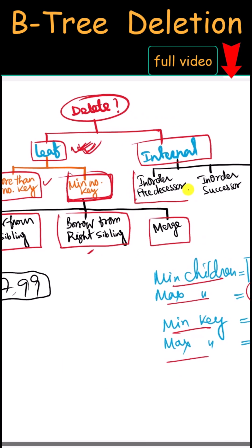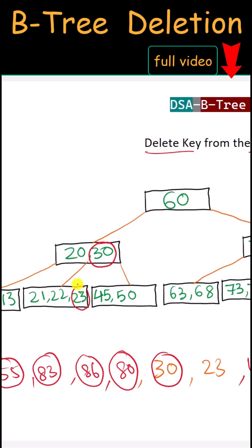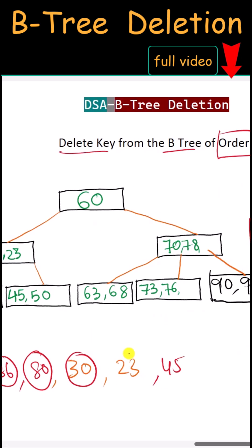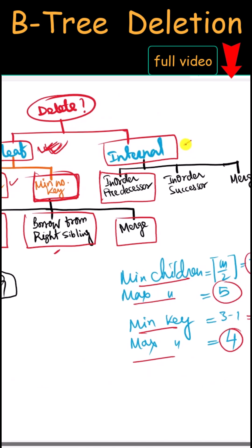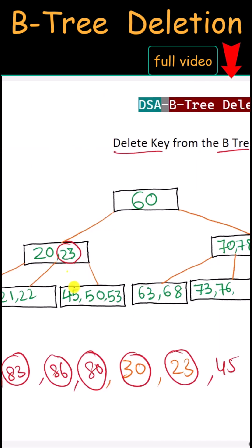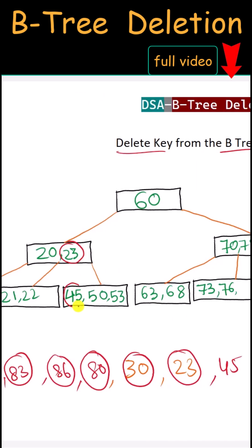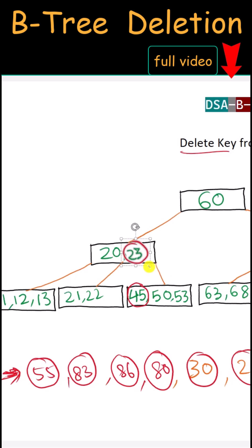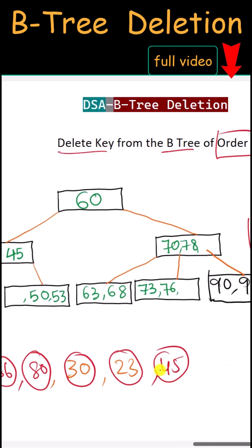Next we have key 30, which is an internal node. We replace it with the in-order predecessor, which is 23, so 30 is replaced with 23. Next we have 23, which is also an internal node. We look at the in-order successor — the smallest value in the right child — and replace key 23 with 45.